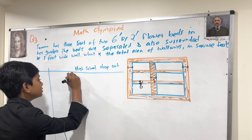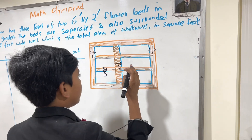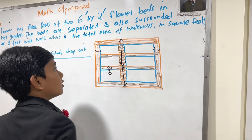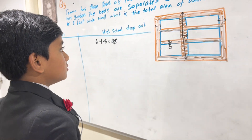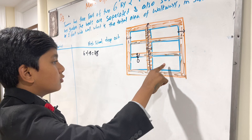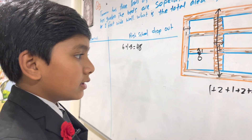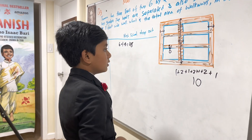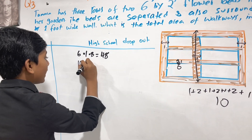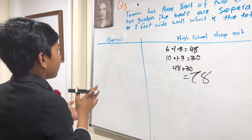So this means we have one, two, three, four, five, six, seven, eight of these six by one inch walkways, making 48 square inches in total. Now we also have these tall walkways — there were three of them. From tip to tail, that is one plus two plus one plus two plus one plus two plus one, which equals ten. So these are ten by one, and there were three of them: ten times one times three is thirty. So 48 plus 30 equals 78.